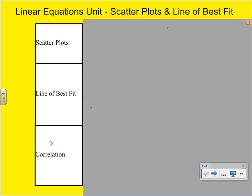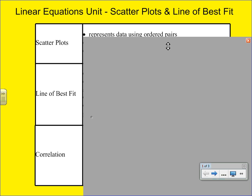The first is what a scatter plot is. A scatter plot represents data using ordered pairs. You're going to be graphing points. The important thing to remember when you're graphing the points is always to choose an appropriate scale for both the x and the y axis. So if your data is going from 0 to 100, don't choose a scale from 0 to 500.